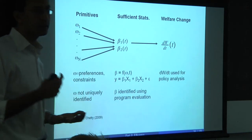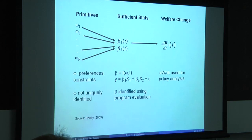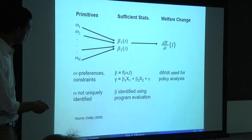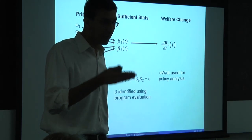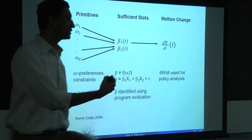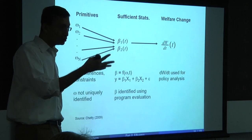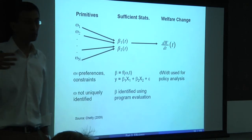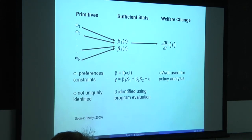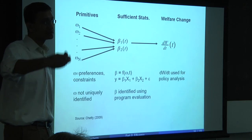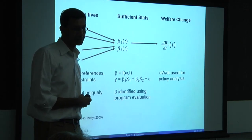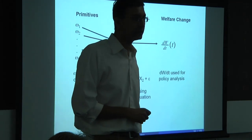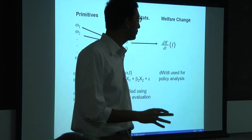One limitation of the sufficient statistic approach: beta is a function not just of structural primitives but also of the current tax rate. You can only do local welfare analysis around the domain of the elasticities you estimate. If you're estimating elasticities from tax rate changes between 40% and 45%, you learn about welfare in that range, but extrapolating to 90% may be unreliable because the elasticity might vary with the tax rate. Some of you may have heard of the Lucas critique in macroeconomics—this is exactly that idea. That's a real limitation, and we'll discuss how it affects analysis in various contexts.